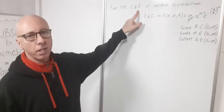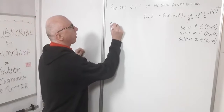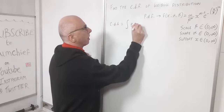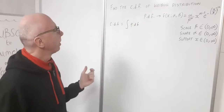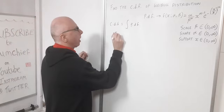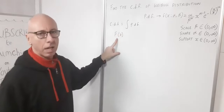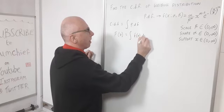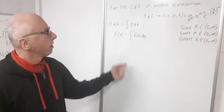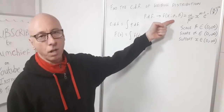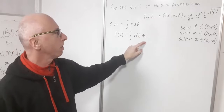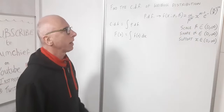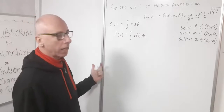To find the CDF — the cumulative distribution function — that is basically the integral of the PDF. In terms of algebra, capital F of x equals the integral of f of x dx. So x is our random variable and we're going to integrate with respect to x. Therefore we need to integrate this PDF.